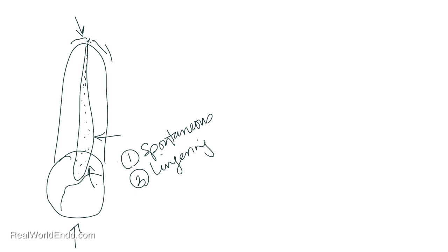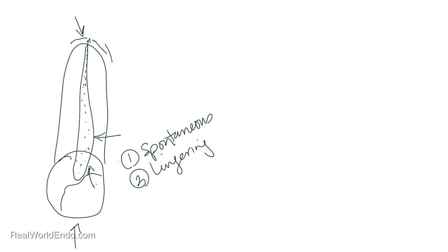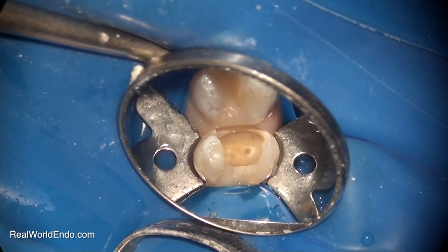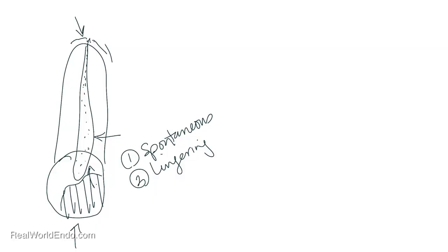What we would do basically is first remove the decay from the pulp and then get proper access. In cases like this, we also have to inform the patient whether crown lengthening is required or not, given how deep the decay is. And once good tooth structure is reached and an access cavity has been prepared, then you're ready to go with your instrumentation.